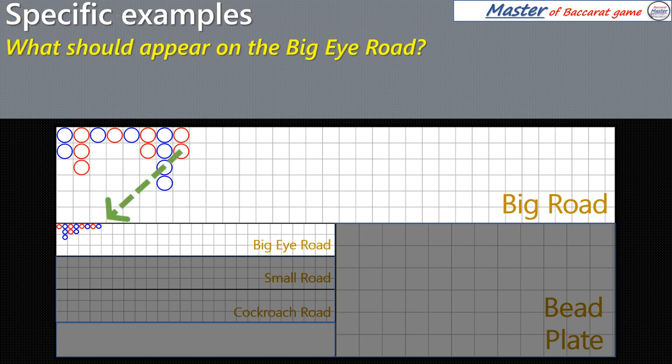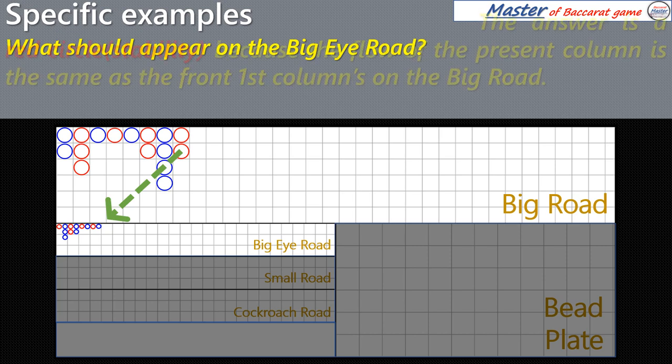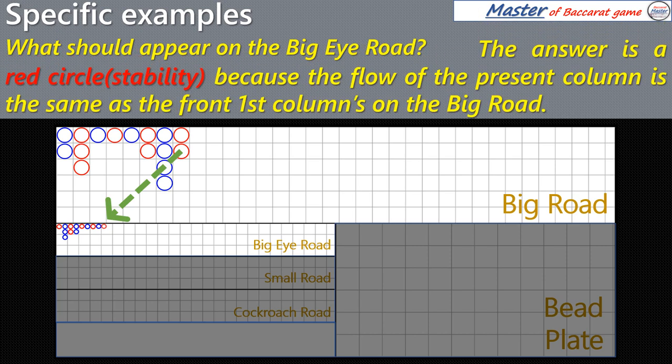What should appear on the Big Eye Road? The answer is a red circle, because the flow of the present column is the same as the front first column's on the Big Road.